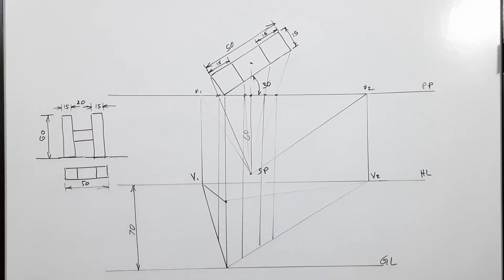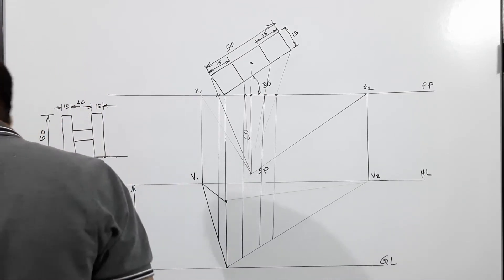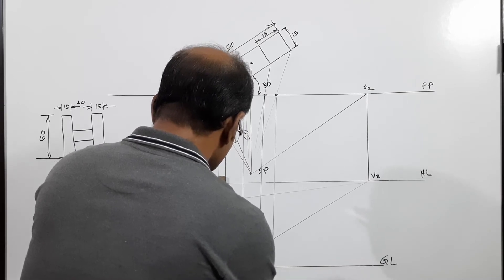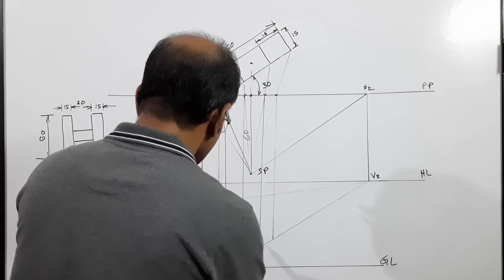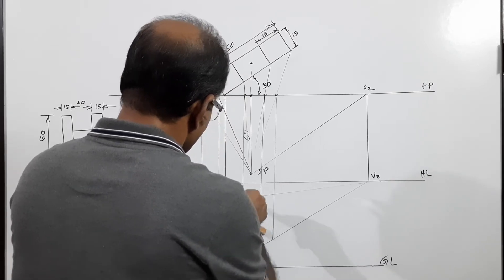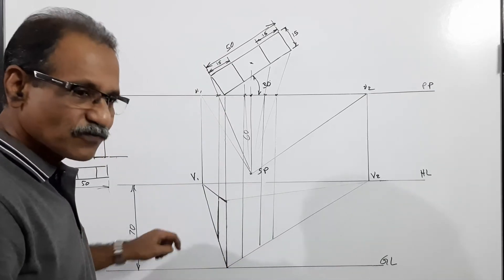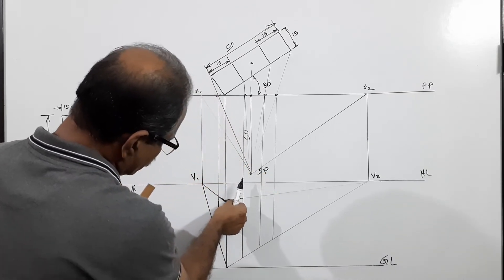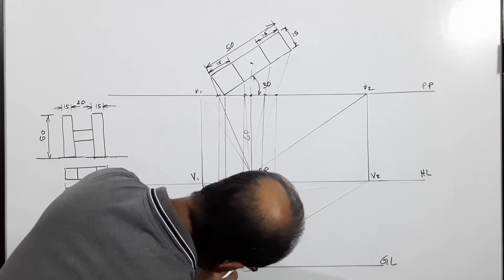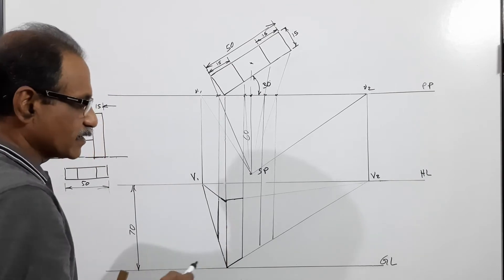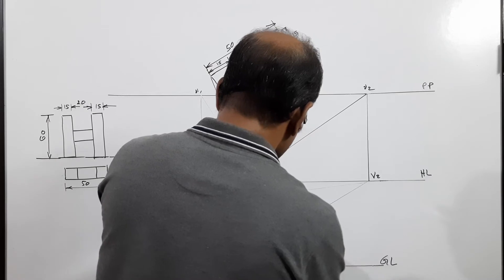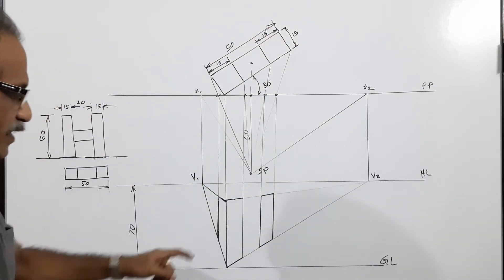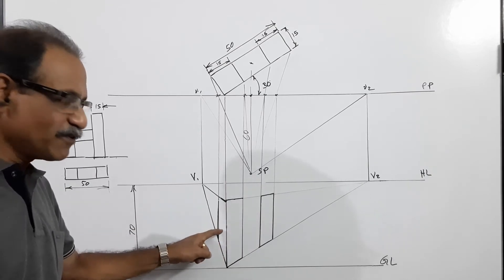Let's analyze what we have got. This here is the left face of the left leg. This is the front face of the left leg. This is the front face of the right leg. So we have: front face of the right leg, front face of the left leg, and side face of the left leg.